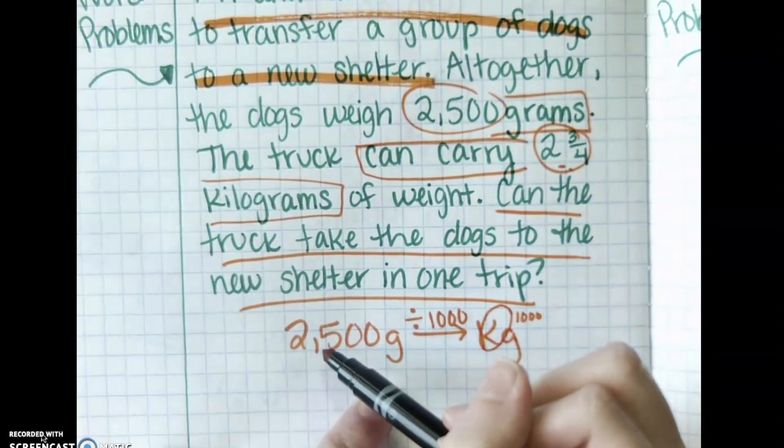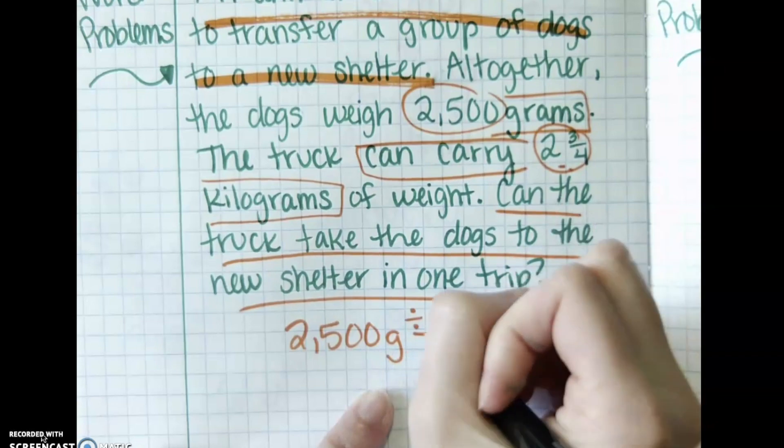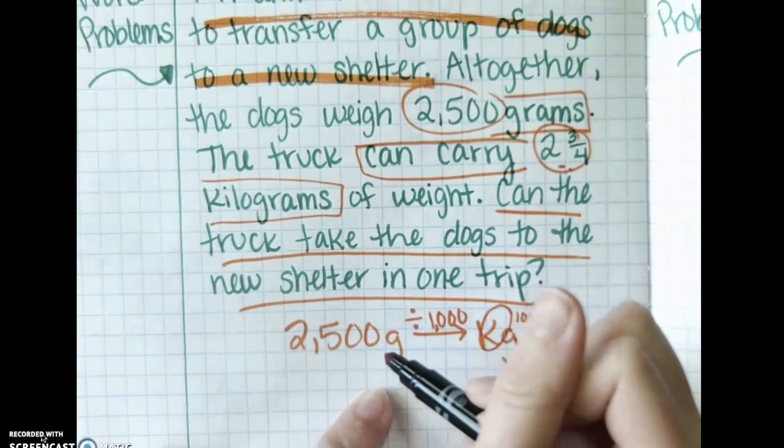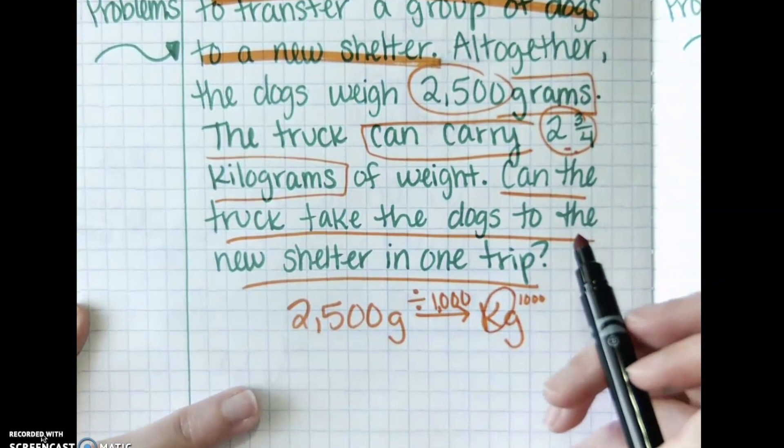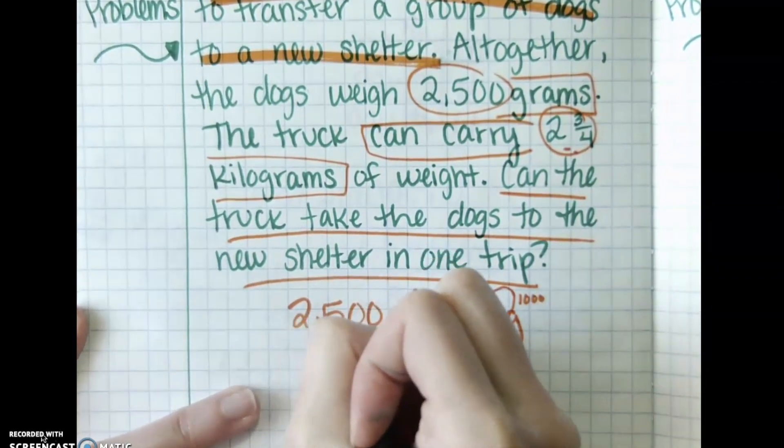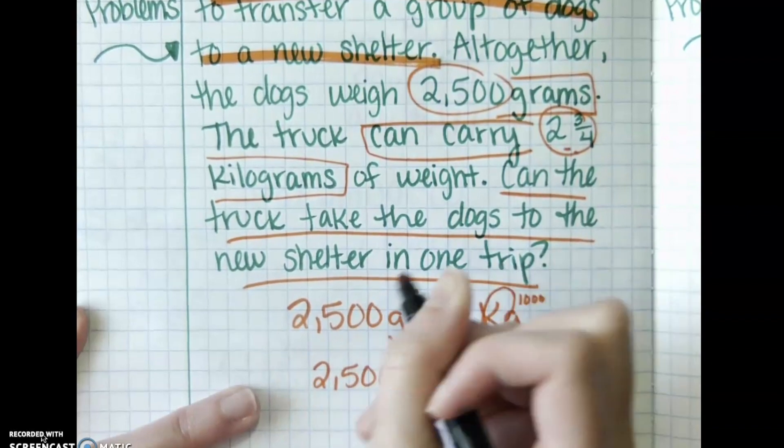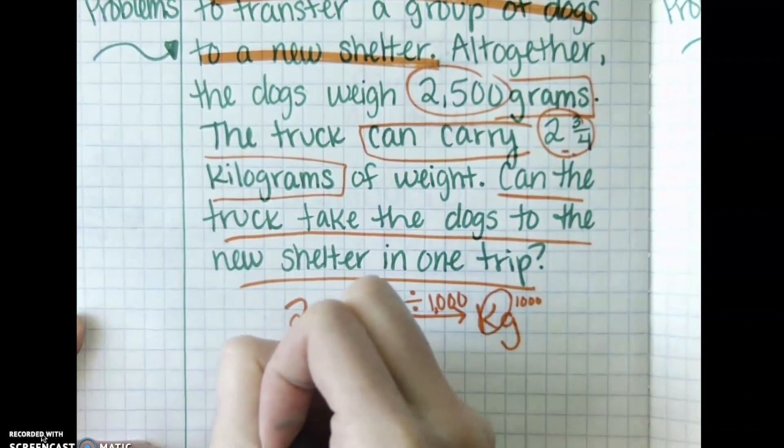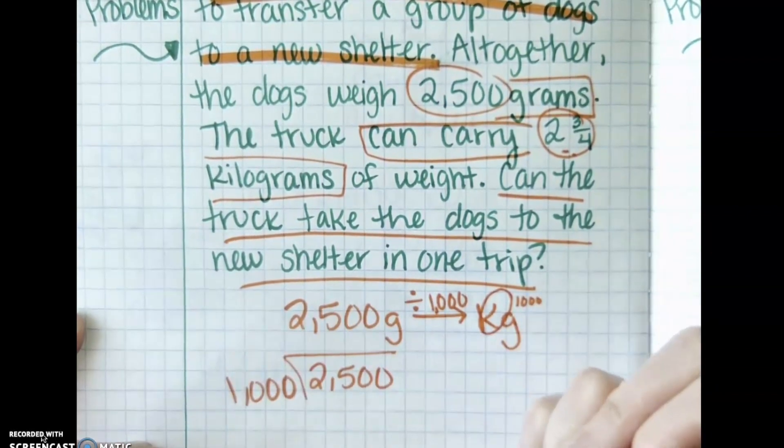So there's 2,500 grams, and I'm putting those into groups of 1,000. If I think of it that way, I can do it in my head, but let's write it down just in case. 2,500 grams divided by 1,000. So I'm putting them into groups of 1,000.